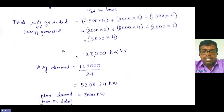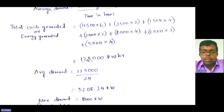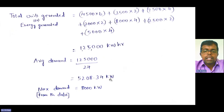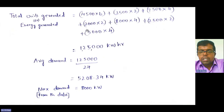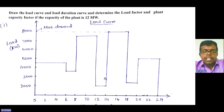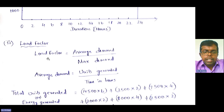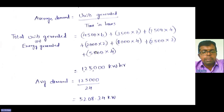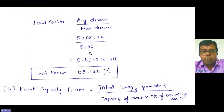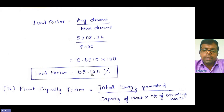The maximum demand from the load curve was 8000 kilowatts. So load factor equals 5208.34 divided by 8000, which gives 0.6510. Multiplying by 100, the load factor is 65.104 percent. Let me know in the comments whether you got the same answer.